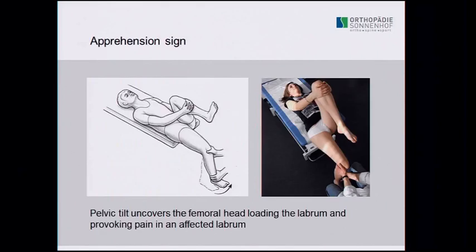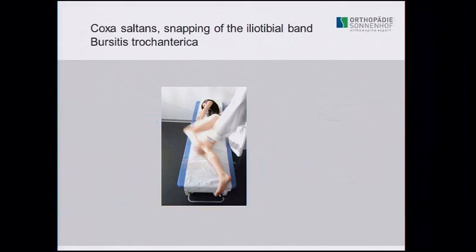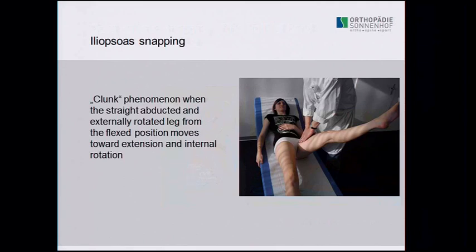The apprehension sign is only tested in patients with hypermobility; in patients with limited mobility it makes no sense as you are not uncovering the femoral head. Trochanter loading tests help to see if there is bursitis and to reproduce typical pain when climbing stairs or lying on the side. Coxa saltans and iliotibial band issues are very often correlated with abductor weakness — when you reinforce the abductors, these symptoms will disappear. Iliopsoas snapping is also an important sign.